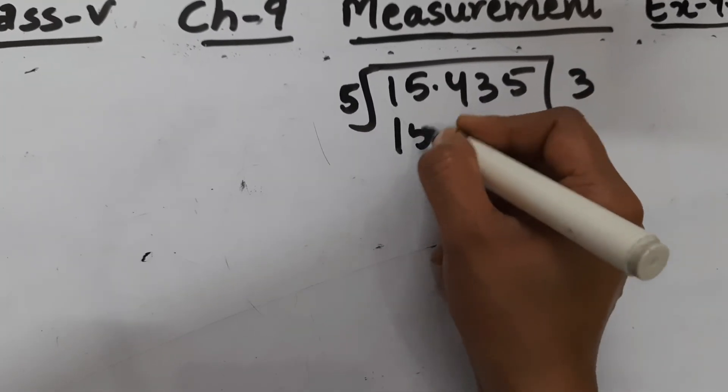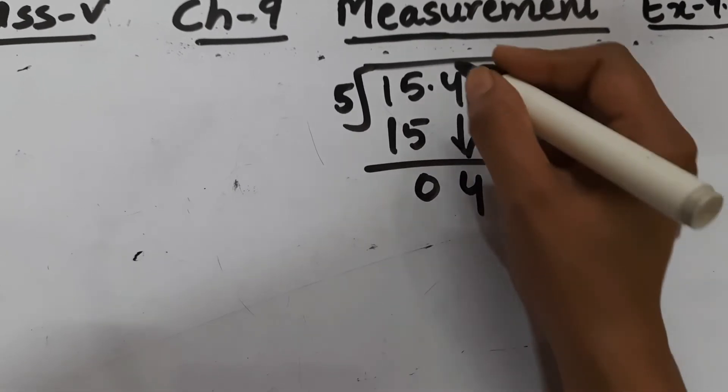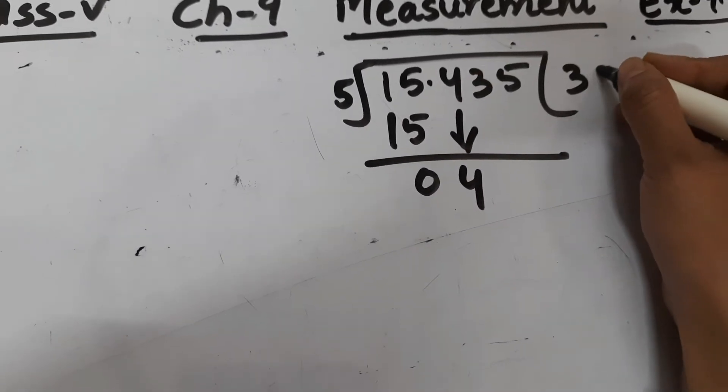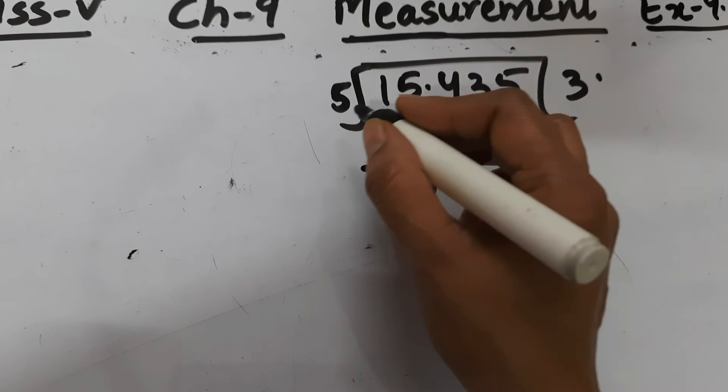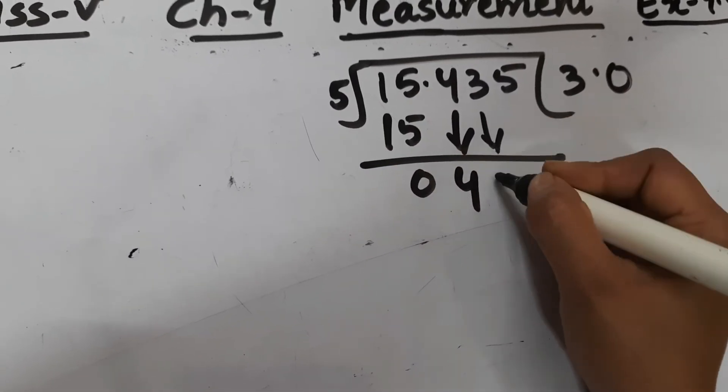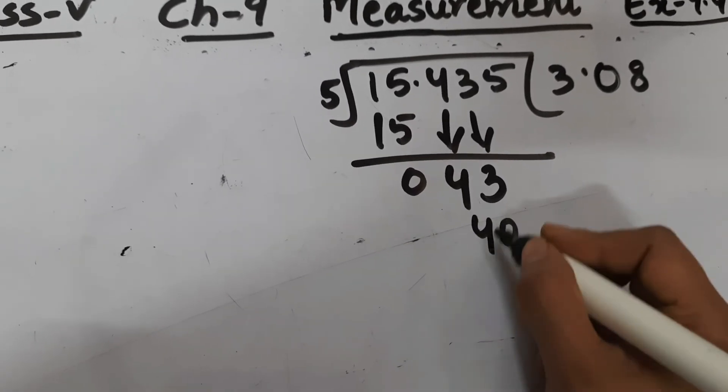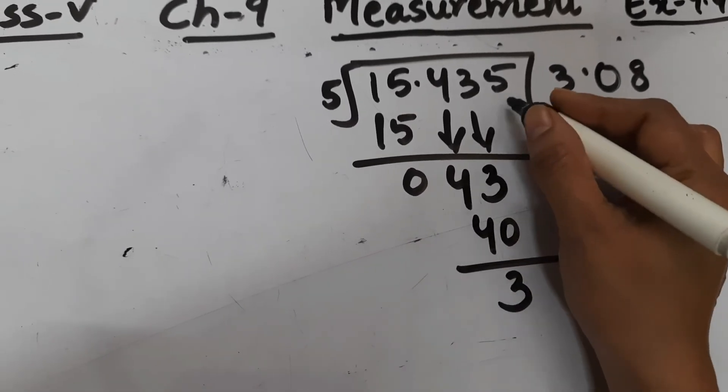Now we will divide 15.435 by 5. Five threes are fifteen, zero. Bring this four down. Decimal is here so we will place decimal here. Now four is not divisible by five, so place zero here and bring three down. Five eights are forty. Bring this five down.